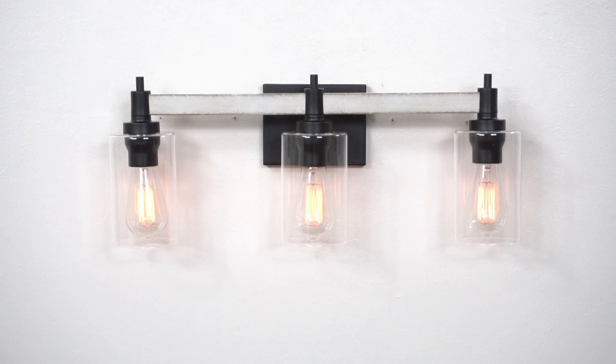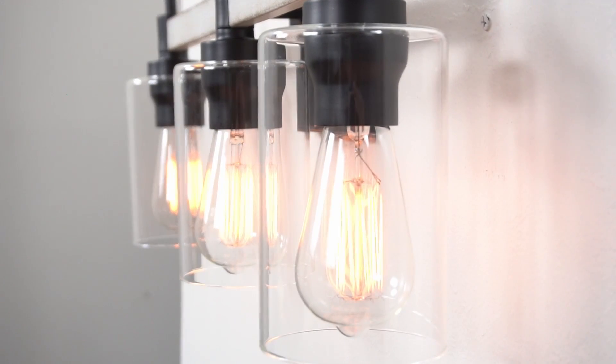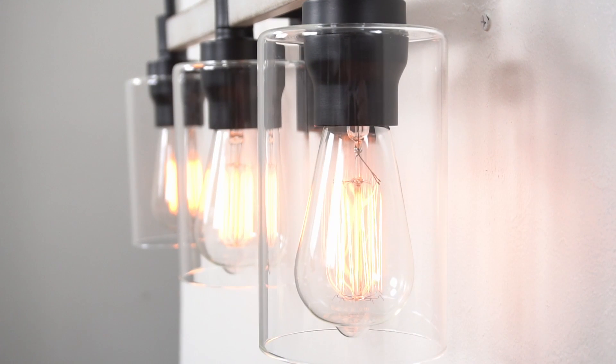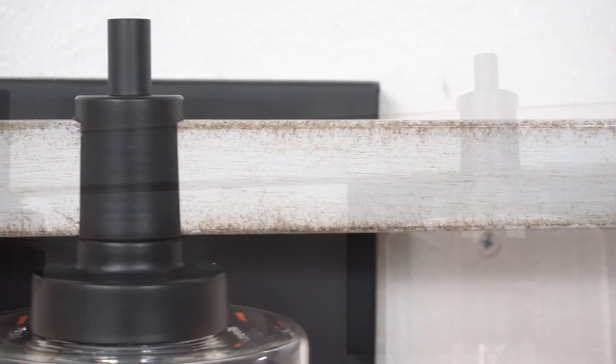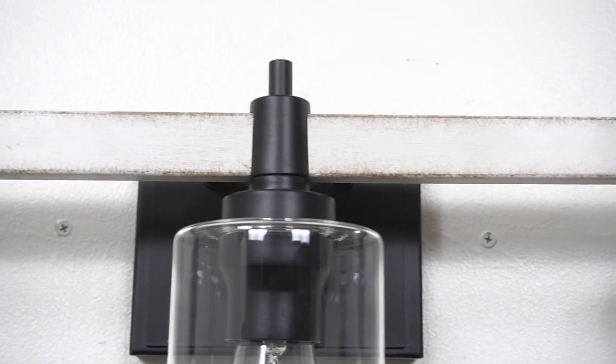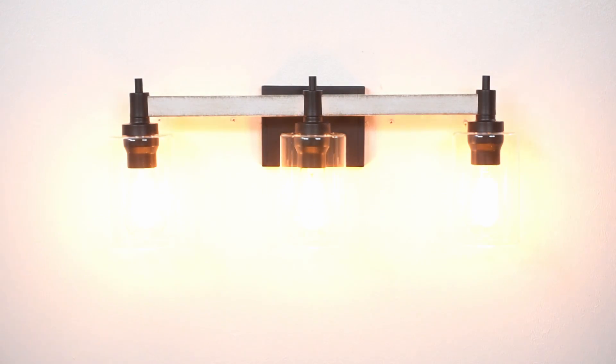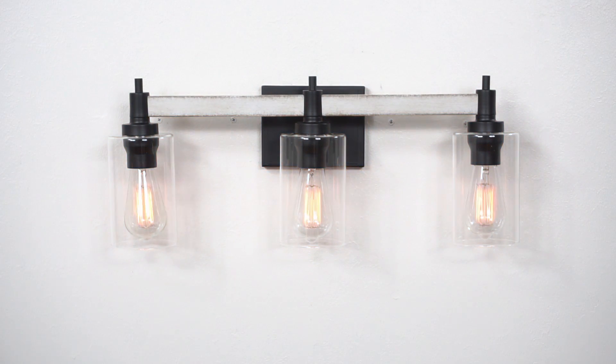Hey everyone, this is the Theo 24 and a half inch vanity light. This fixture features gorgeous cylindrical glass shades, has a rustic white ash wood style accent piece, has a sleek black finish, and is dimmer compatible when paired with the correct bulbs and dimmer combination.